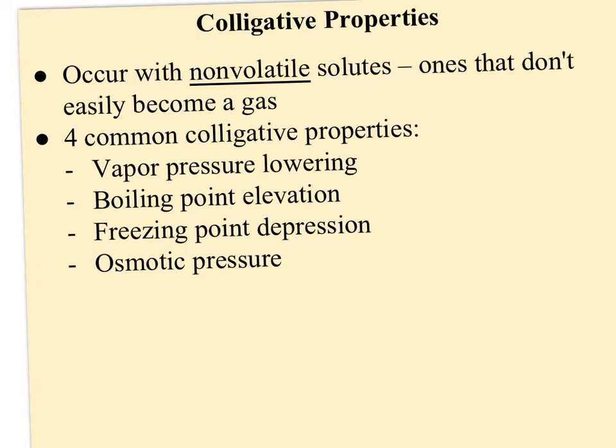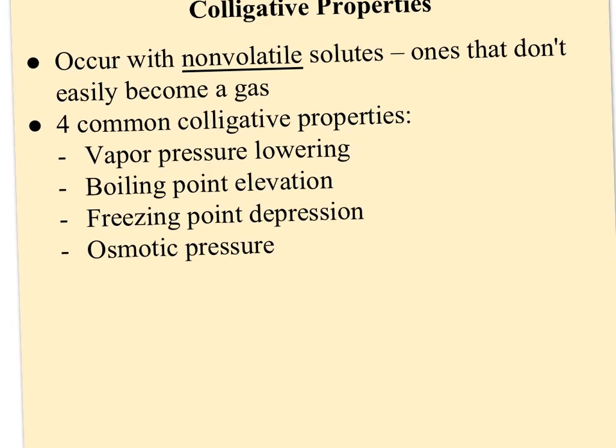If you look at the names, they already tell you what effect they're having: vapor pressure is going down, boiling point is going up, and freezing point depression means down. Osmotic pressure doesn't follow that pattern because it occurs on two sides of a membrane — like a cell wall. One side the pressure goes up, the other goes down, so both are occurring.